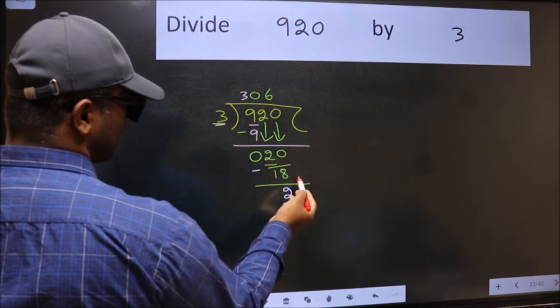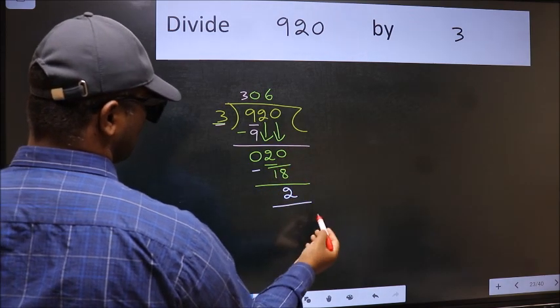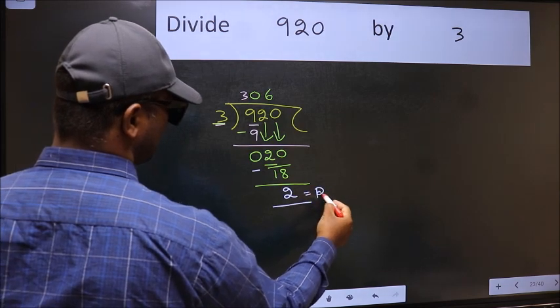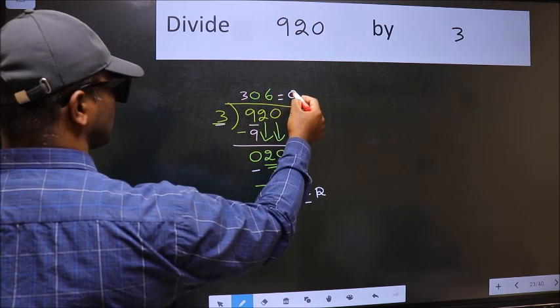We get 2. No more numbers to bring it down. So we stop here. This is our remainder and this is our quotient.